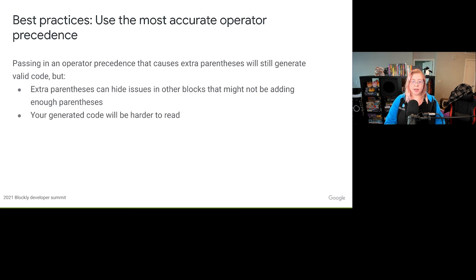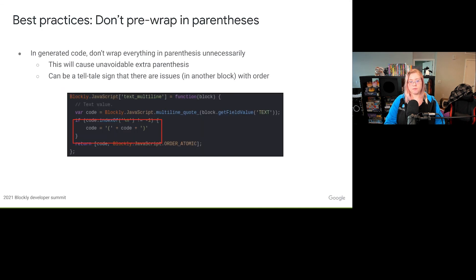When writing generator code, use the most accurate operator precedence for min and max strength. Some complicated blocks may need additional logic to determine which operator precedence to use with value-to-code — text get substring is a good example of a block that does extra checks to determine which operator precedence to use. Although extra parentheses don't cause invalid code, they can hide issues with other blocks that might not be adding parentheses when they're supposed to, and your generated code will be harder to read. Another best practice is to not pre-wrap generated code in parentheses. Not only will this cause unavoidable extra parentheses, it can hide bugs in other blocks. When we fixed the multiline text block to no longer return code pre-wrapped in parentheses and return the correct order, it revealed issues in the order of other text blocks that then needed to be fixed.